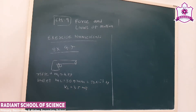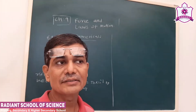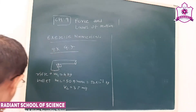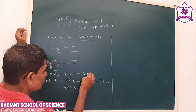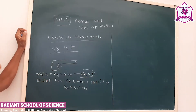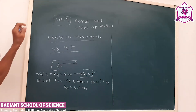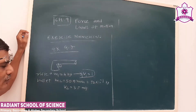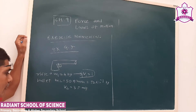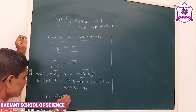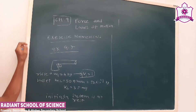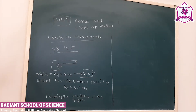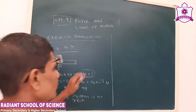The initial recoil means the velocity of the rifle, which we call V1. Initially the system is at rest, so the initial momentum is zero. When the bullet is fired, the final momentum consists of M1V1 plus M2V2. By the law of conservation of linear momentum, the final momentum should be equal to the initial momentum.